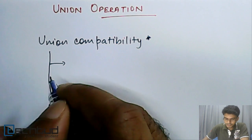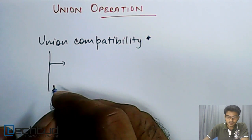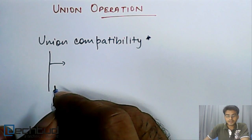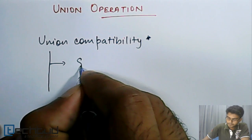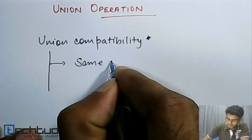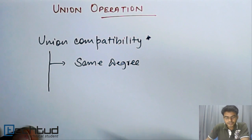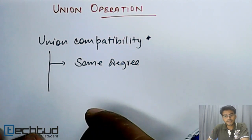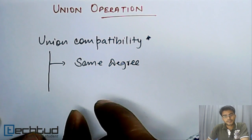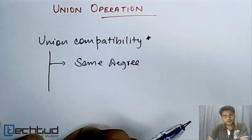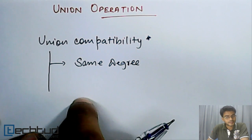The first condition is that the degree of relations should be the same. Now the question comes, what is degree of relation? Degree of a relation is the number of attributes present in that relation.